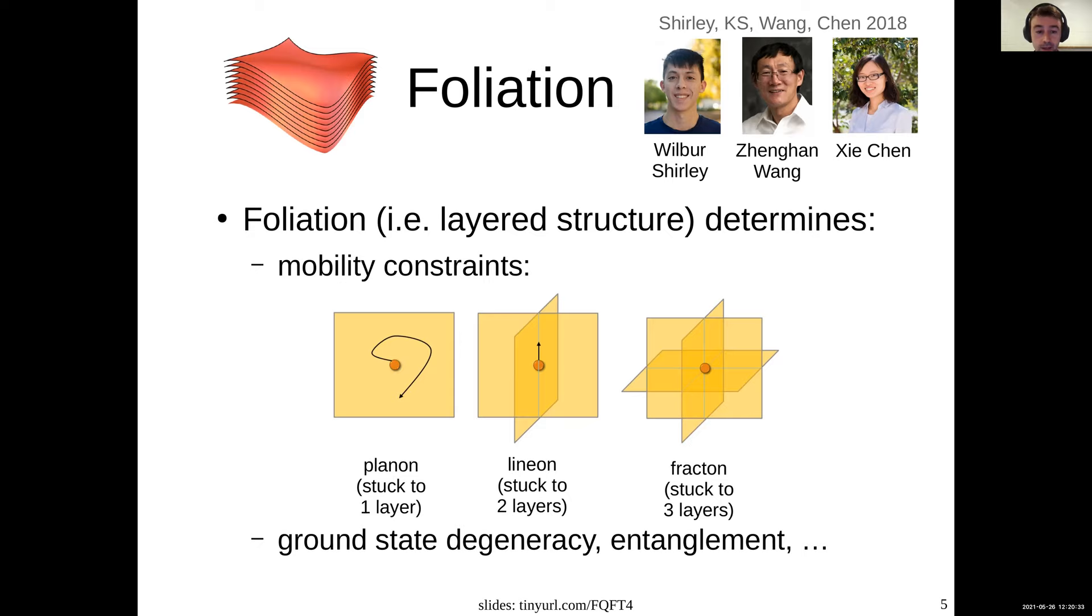The planon particles are stuck to one layer. The lineons are stuck to the intersection of two layers, while fractons are stuck to the intersection of three layers. You can also think about this as planons, lineons, and fractons being charged under one, two, or three layers. And then each layer has some charge conserved mod Z_2, for example. And so that means the planon can't move off its layer without violating the charge of that layer. While a fracton can't move at all, else it would change the charge on one of the three layers. This foliation also lets us understand things like the ground state degeneracy and the entanglement quite naturally.